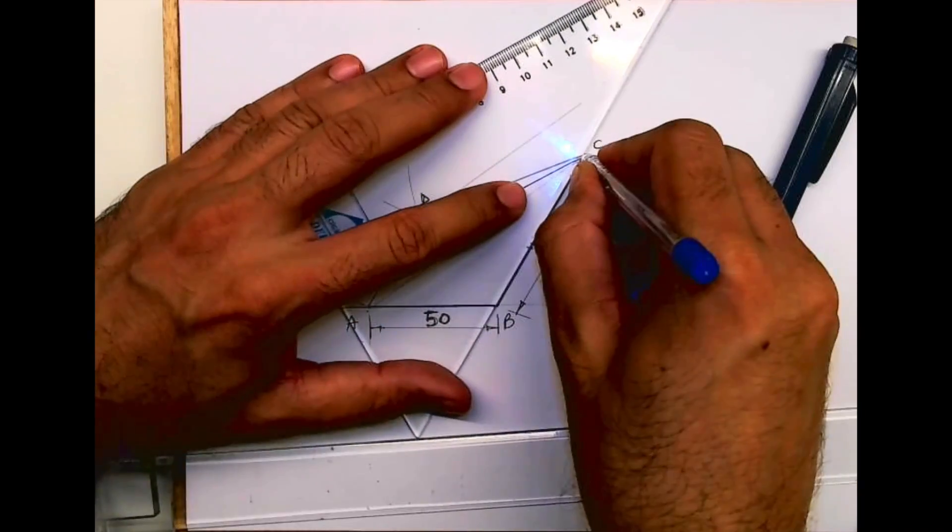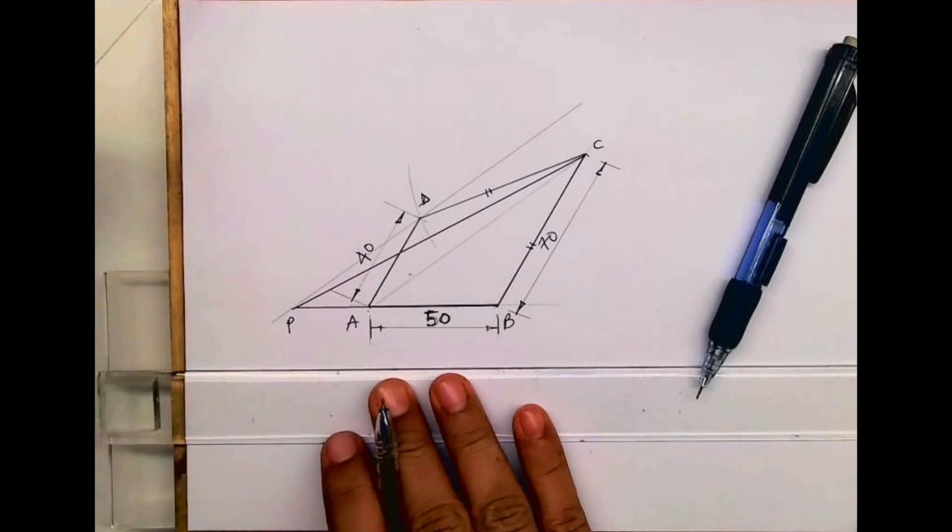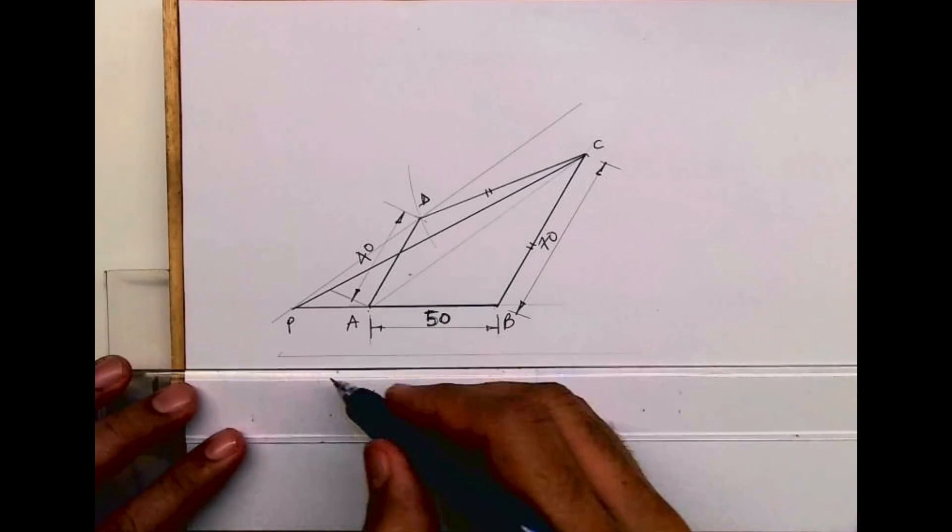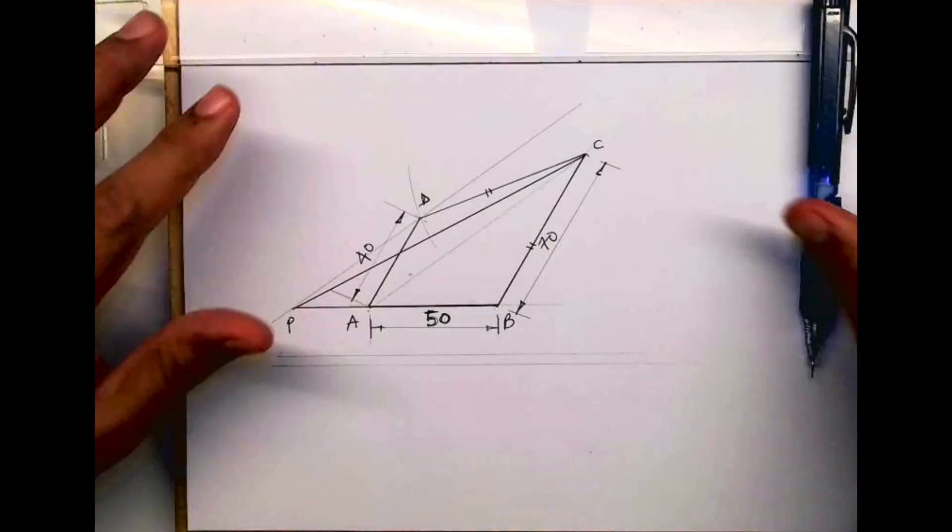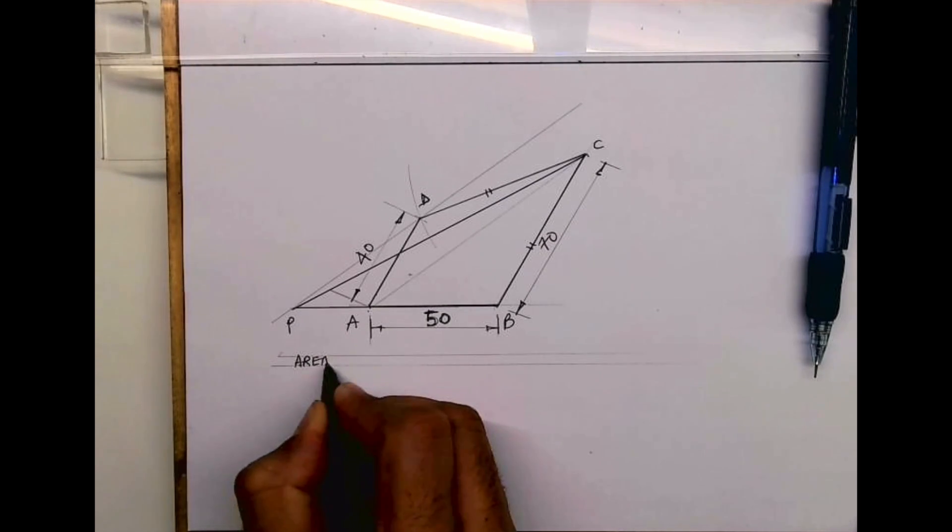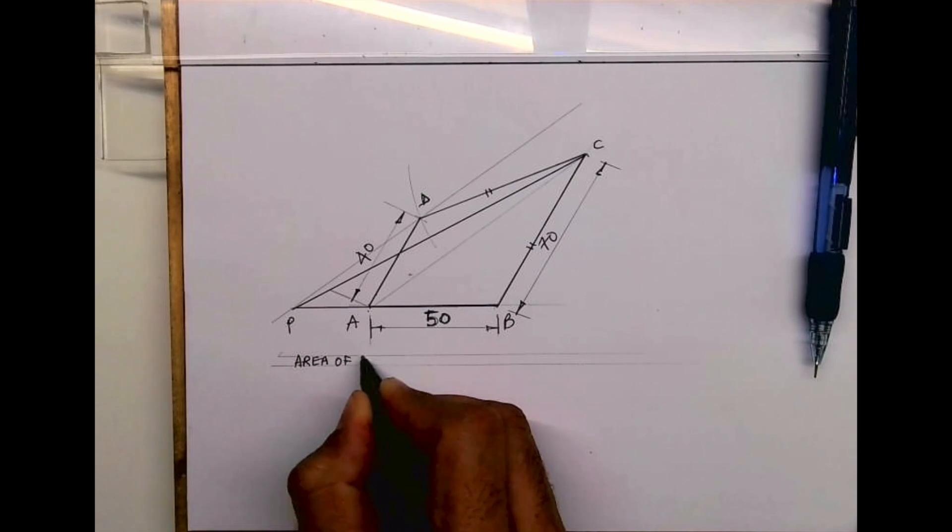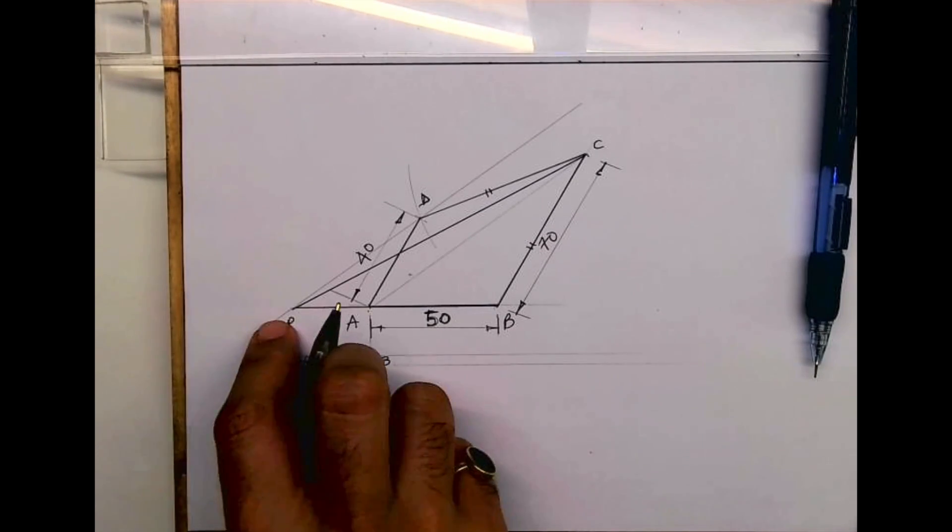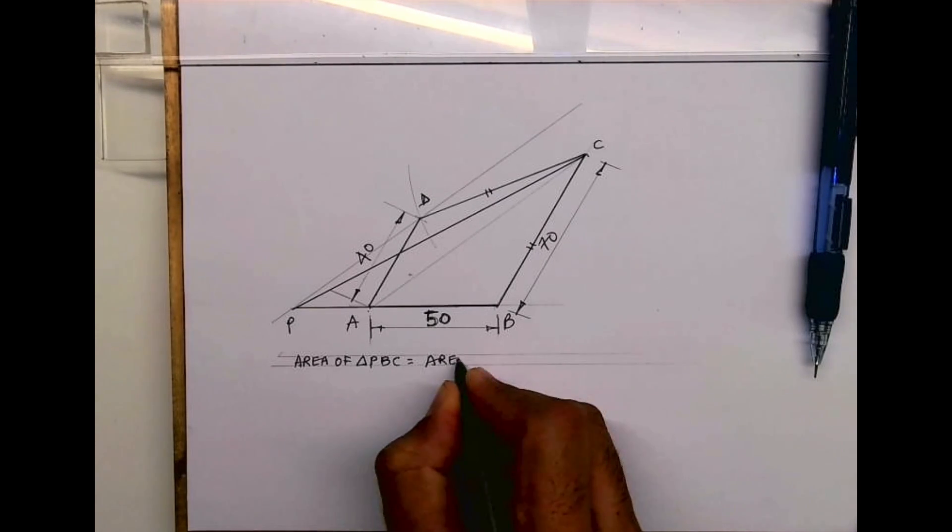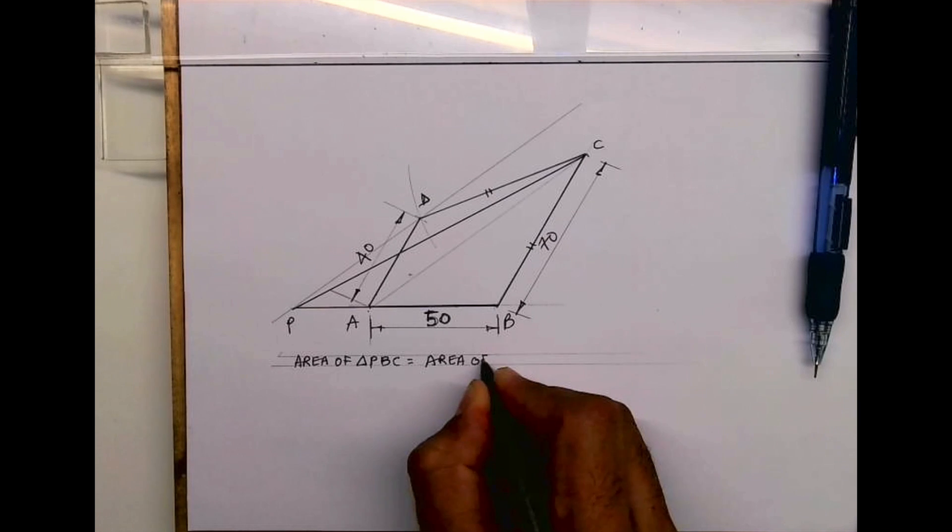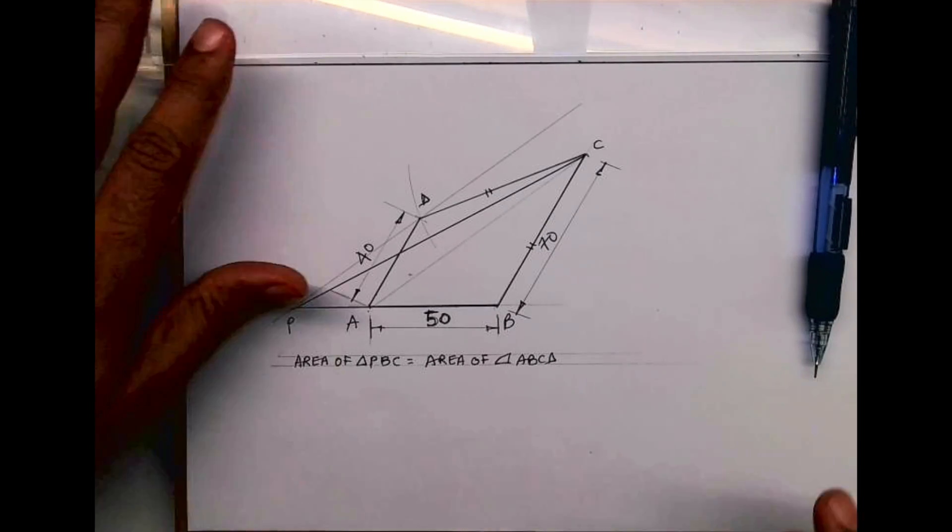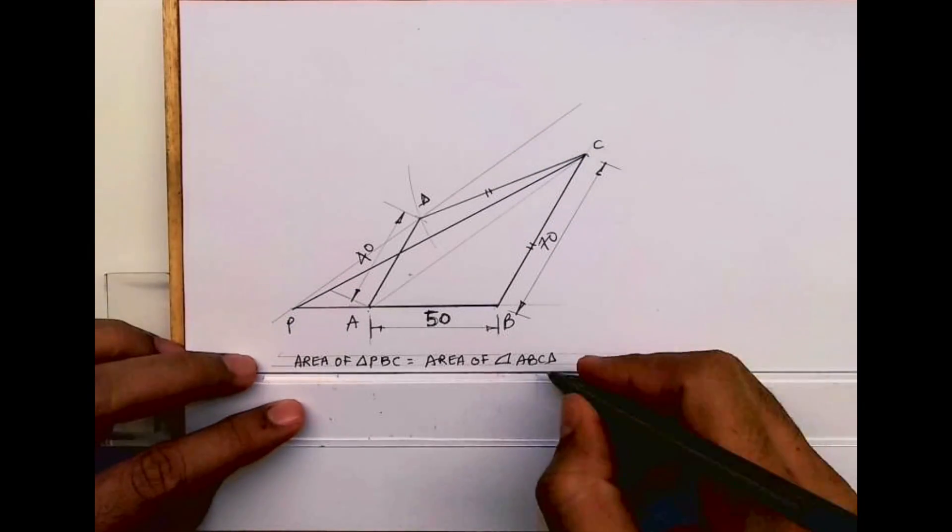Triangle PBC. So area of triangle PBC is equal to area of quadrilateral ABCD. I hope you people have understood this. Thank you.